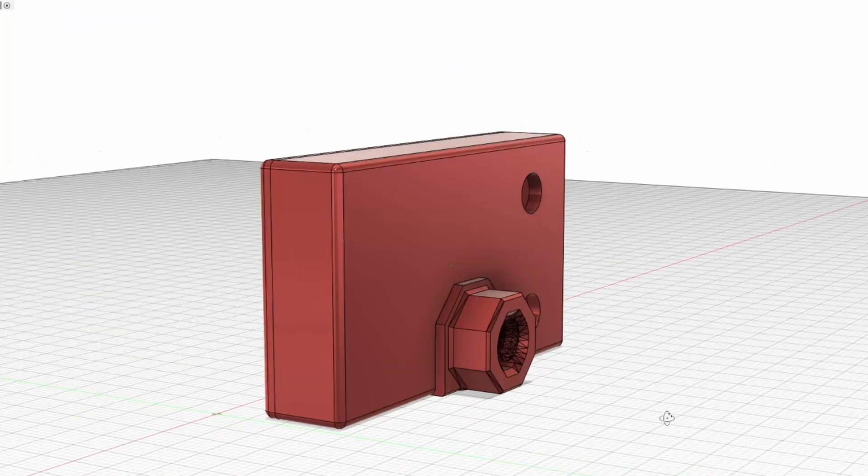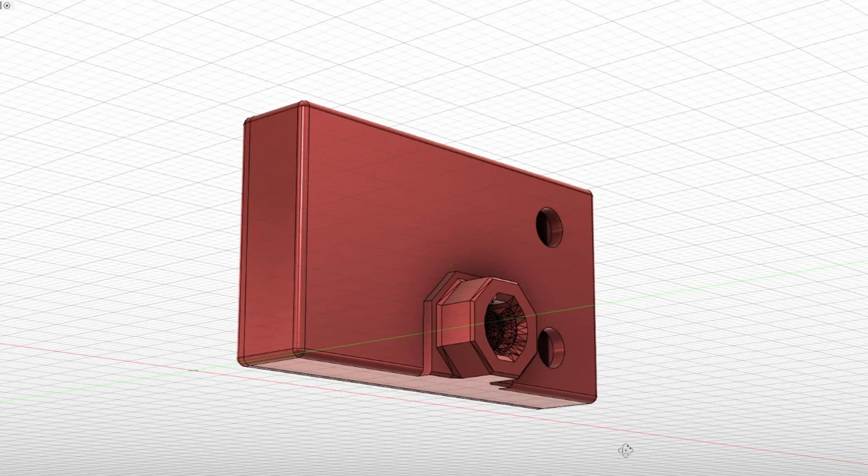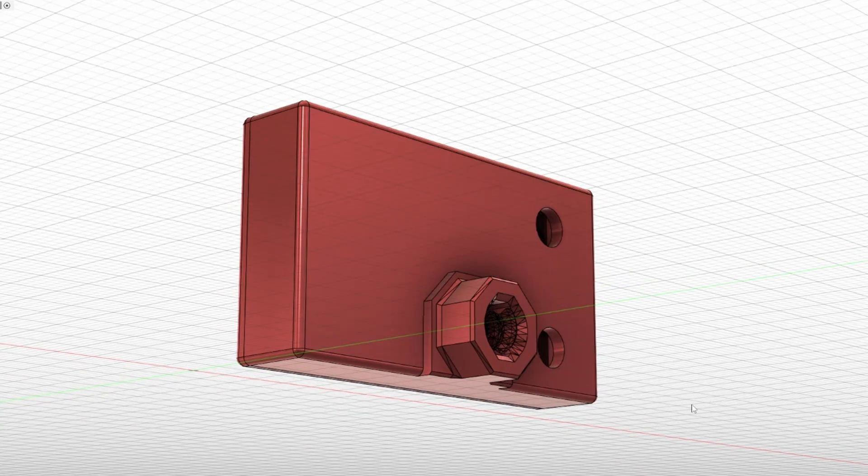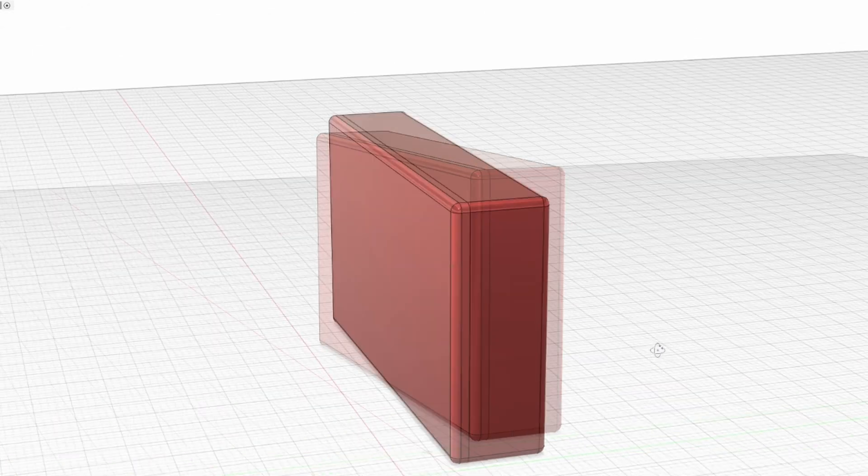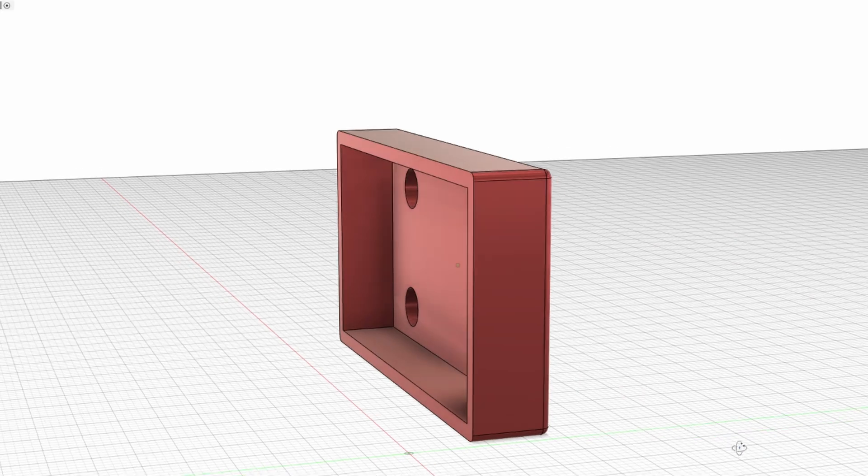So first of all this is the ESP32 holder and if you have a look at the back we can see that multipoint connection and then we have these two holes for the wires to go through. Now if we turn it around we can see we do have a lid and that's just sort of friction fit and that'll keep it nice and secure.